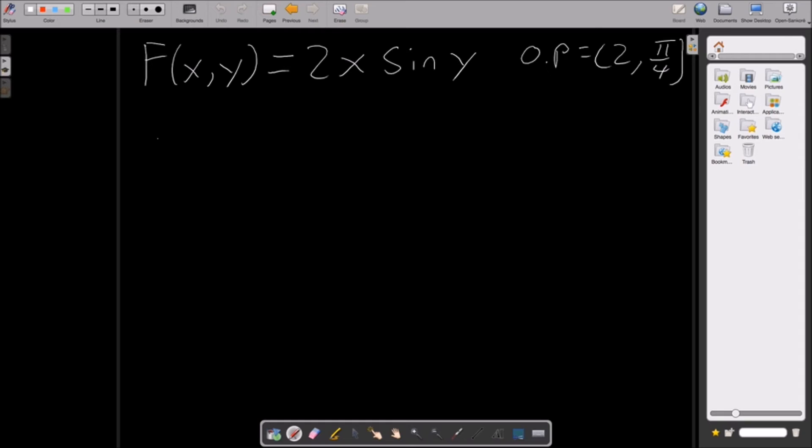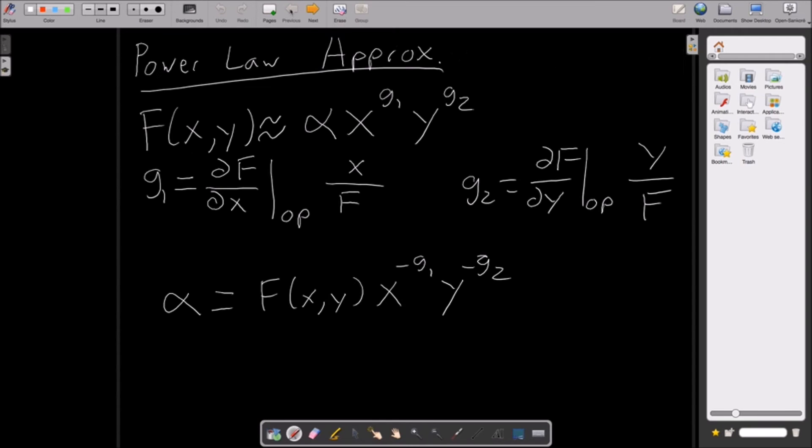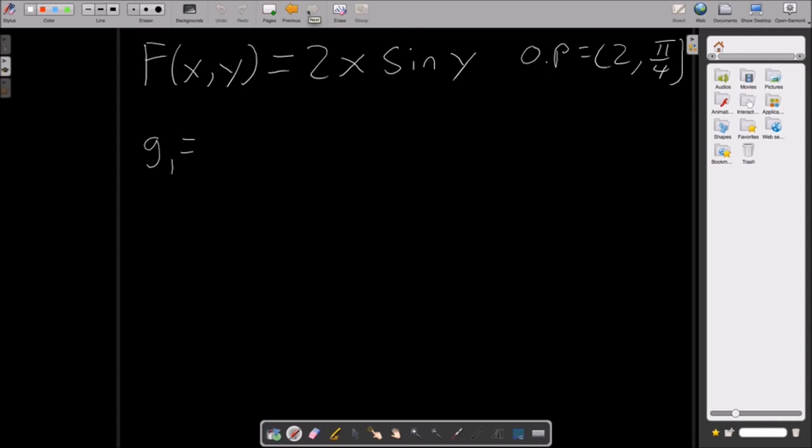So for g1, we're going to take the partial of f over the partial of x, in which case you just derive the function, and that would just give us 2 times sine of y at the operating point. And then we multiply the x over 2x sine y, which is the function. And now we can just cancel numbers out. I see this 2 cancels out with this 2, right? These x's will cancel out. And then these signs will cancel out. So all we're left with is 1. Excellent. Sweet.